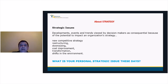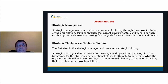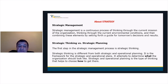Strategic management is a continuous process of thinking through the current mission of the organization, thinking through current environmental conditions, and combining these elements by setting a guide for tomorrow's decisions and results. The first step in strategic management is strategic thinking, whose outcome is strategic decisions — decisions dealing with the determination of strategy, providing definitions of the business, and the general relationship between the organization and its environment.